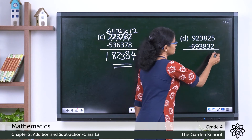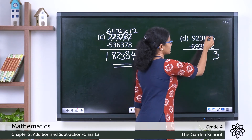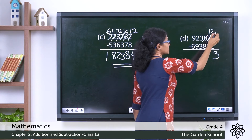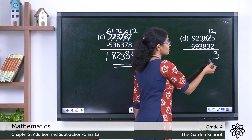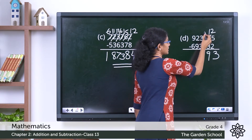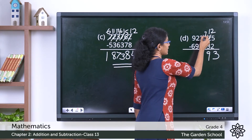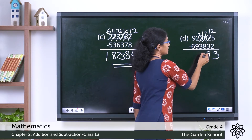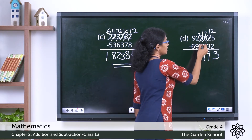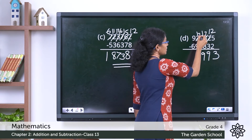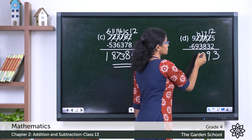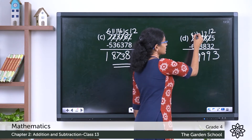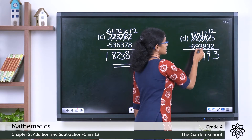Question D: five minus two is three. Two minus three — we borrow, making twelve; twelve minus three is nine. Seven — we borrow again: seventeen minus eight is nine. We borrow again: twelve minus three is nine. We borrow again: eleven minus nine is two. Eight minus six is two. That's question D.